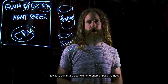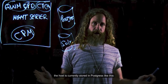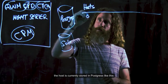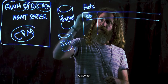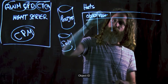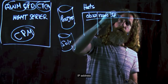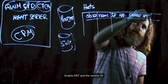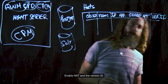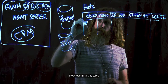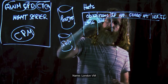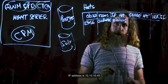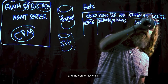Now let's say that a user wants to enable NAT on a host. The host is currently stored in Postgres with fields for object ID, name, IP address, enable NAT, and the version ID. The version ID in this case is 541.